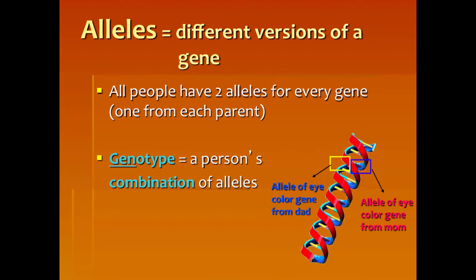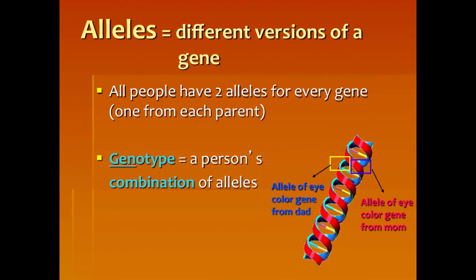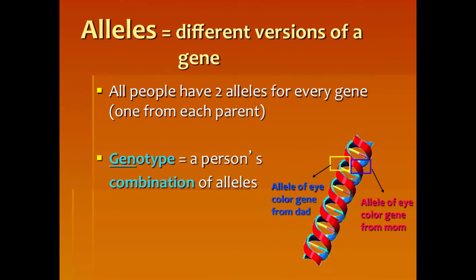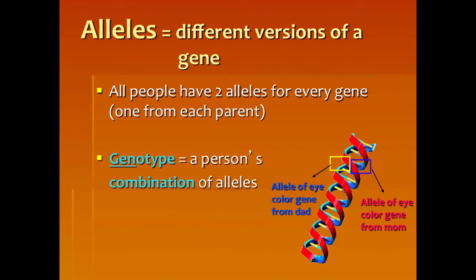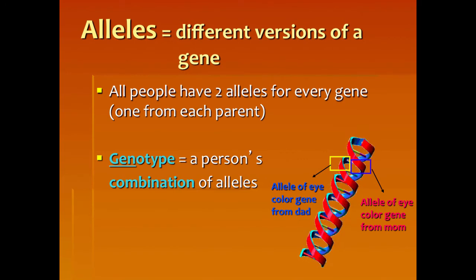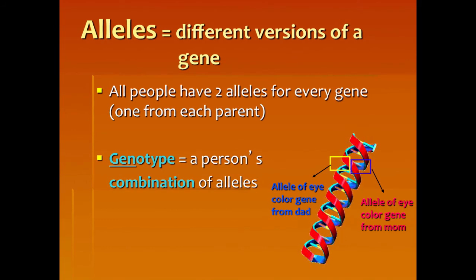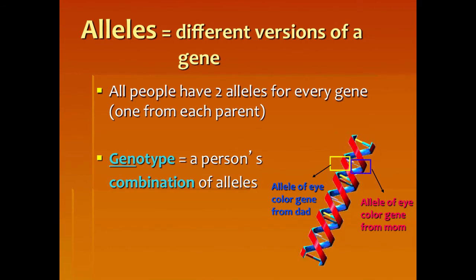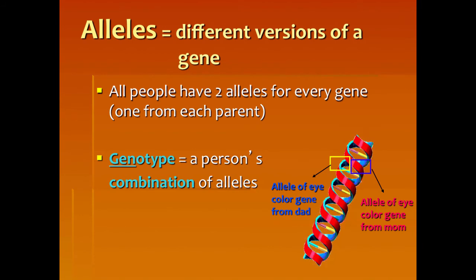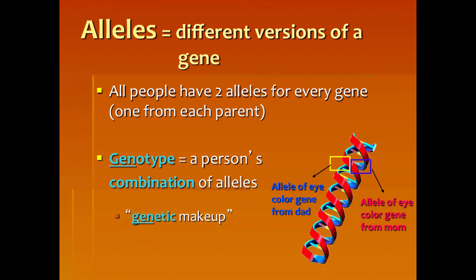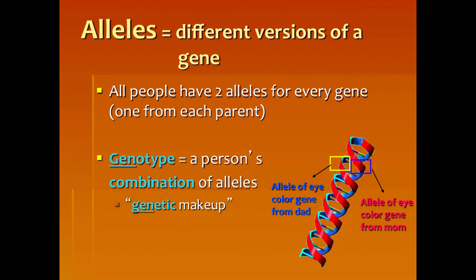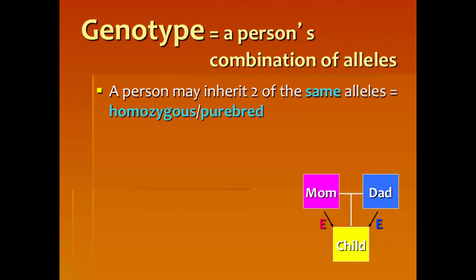This is what we call genotype — a person's combination of alleles. The way we write it, like big B, little b — dominant B, recessive B — that is a genotype. That's how we write things down in genetics. What it looks like is the phenotype: brown, green, blue, and so on. Your genotype is your genetic makeup.